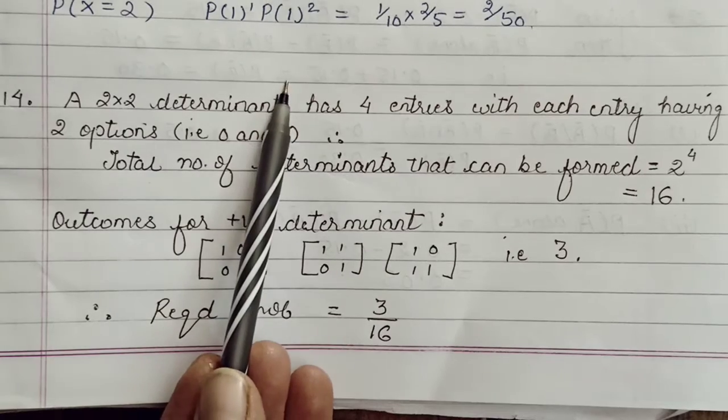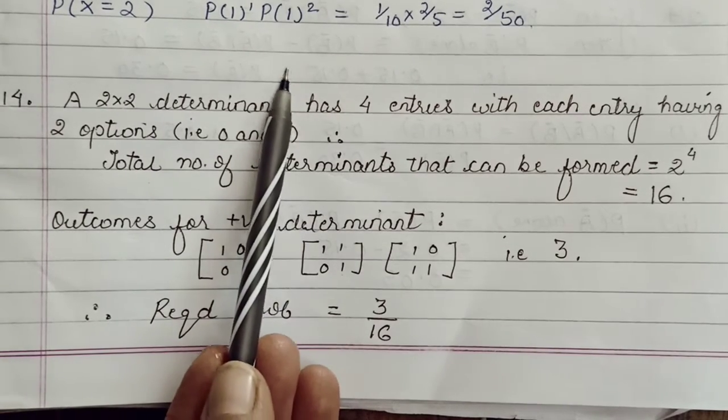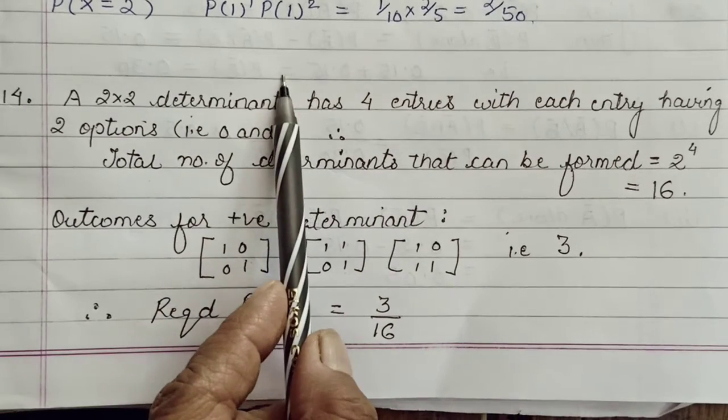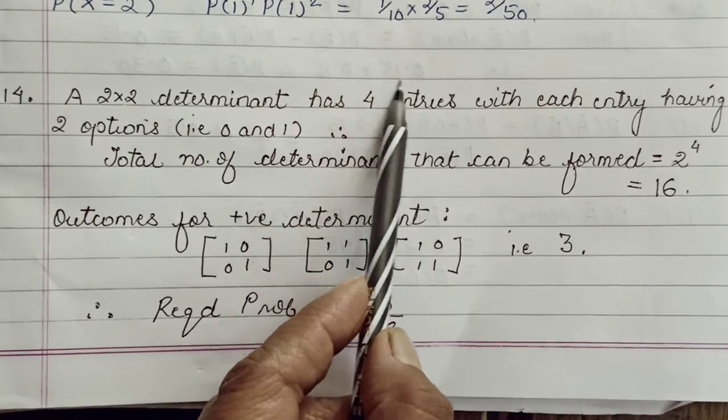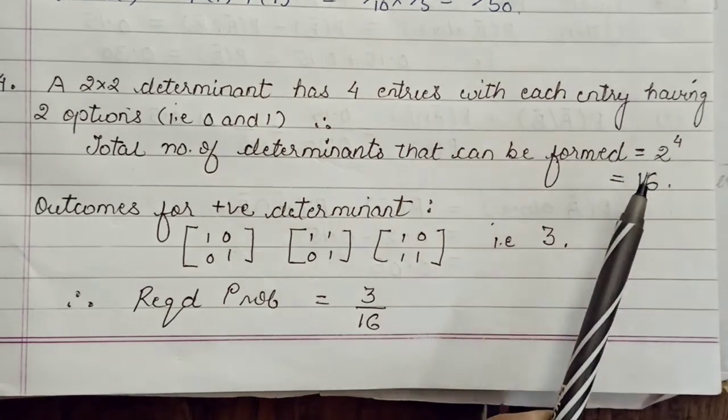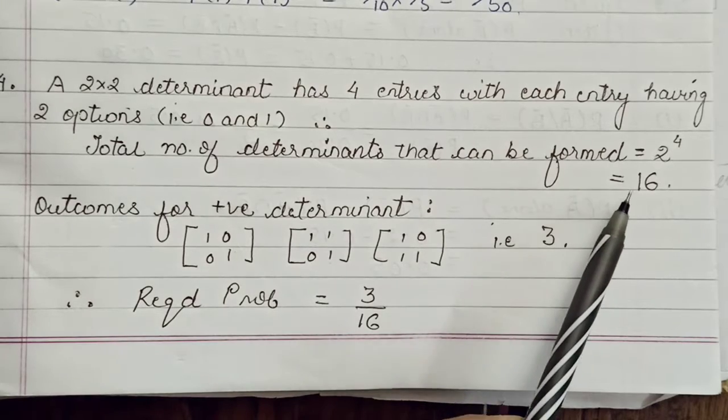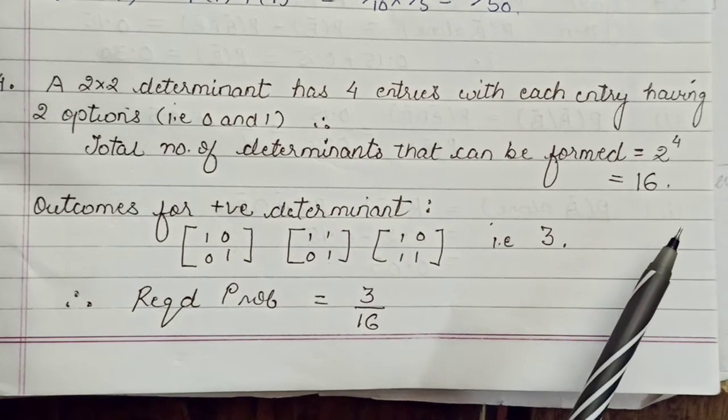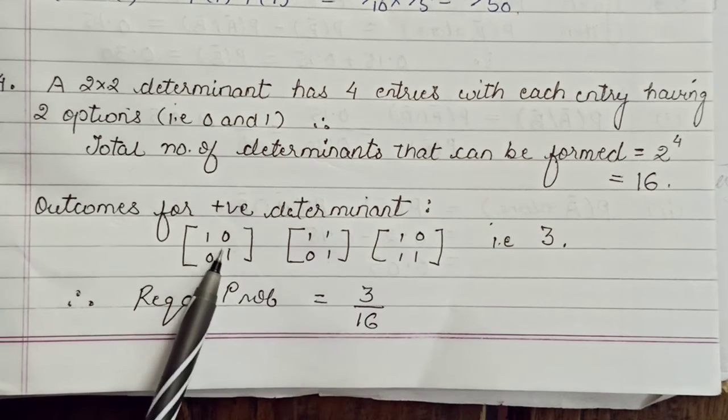Simply see - you have a 2 by 2 determinant. How many entries will be there in a 2 by 2 determinant? 4 entries - 1, 2, 3, 4 entries. And each entry can be either 0 or 1, so you have 2 choices for every entry. So for the first place you have two options, followed by the second also 2, times 2, times 2 - so 2 to the power of 4 will be your total determinants that can be formed by fitting 0, 1, 0, 1. So total determinants you can make are 16.